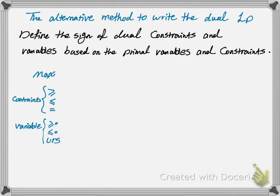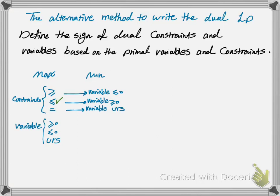Suppose you want to write the dual programming problem for this max problem — so if I write the dual it's going to be a min problem. You can define the sign of the variables based on the sign of the constraints and vice versa. If you have a max problem, less than or equal is the normal situation. So if you have a constraint that has a less than or equal sign, the variable associated with that is going to have the normal condition, which means it's going to be positive. However for the other two conditions you have to change the sign. If your constraint is greater than or equal, your variable becomes negative. If your constraint is equal, then your variable is unrestricted in sign.